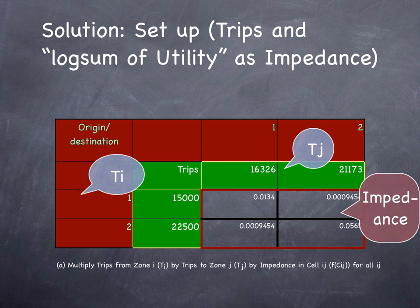So what do we have? We have origin zones, origin zone 1 and origin zone 2. We have destination zones, destination zone 1 and destination zone 2. We have the total number of trips in origin zone 1 and origin zone 2, so 15,000 trips originated in zone 1, 22,500 trips originated in zone 2. We have the normalized number of destinations in zone 1, 16,326, and the normalized number of destinations in zone 2, 21,173. And we have the impedance, which we solved for in a previous video, 0.013 for instance.